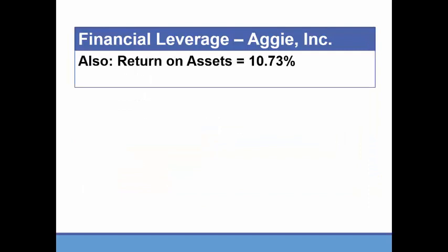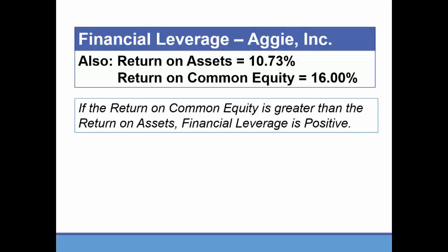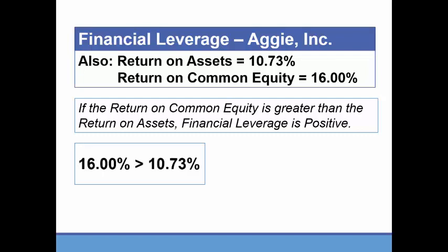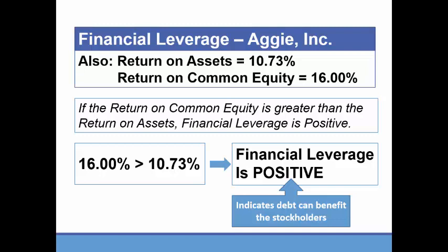Another way to look at financial leverage is to compare return on assets to return on equity. Since Aggie only had common stock, we can call it return on common equity. If return on equity is greater than return on assets, financial leverage is positive because a greater return was transferred to shareholders. Since 16% return on equity is greater than 10.73% return on assets, financial leverage is positive. Overall, positive leverage means that debt can benefit the stockholders — it might be worth borrowing for this company.